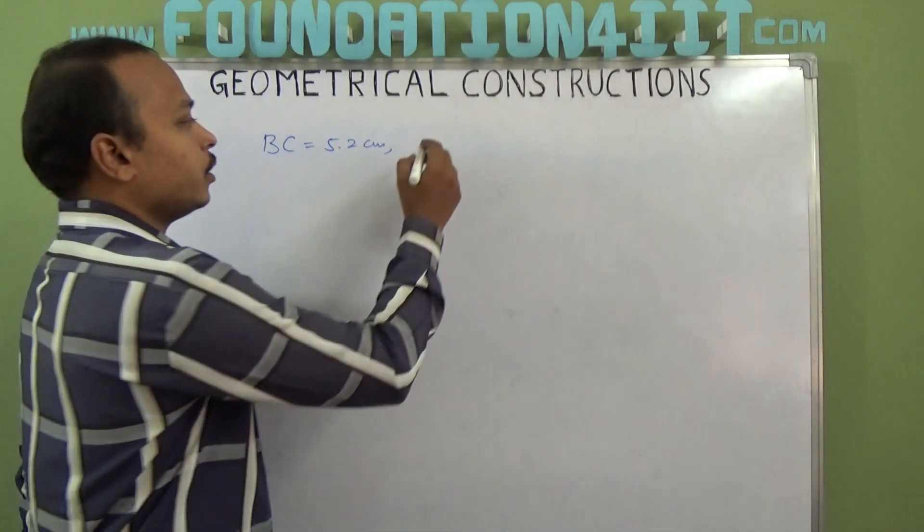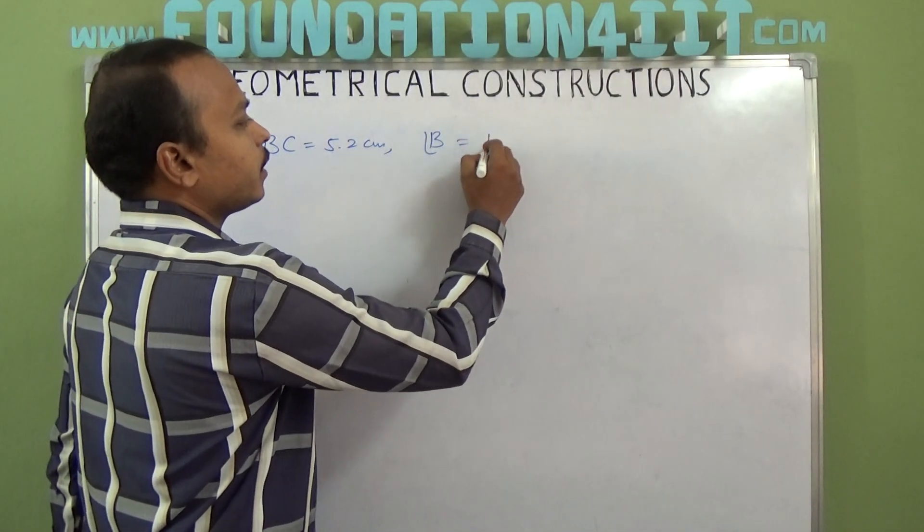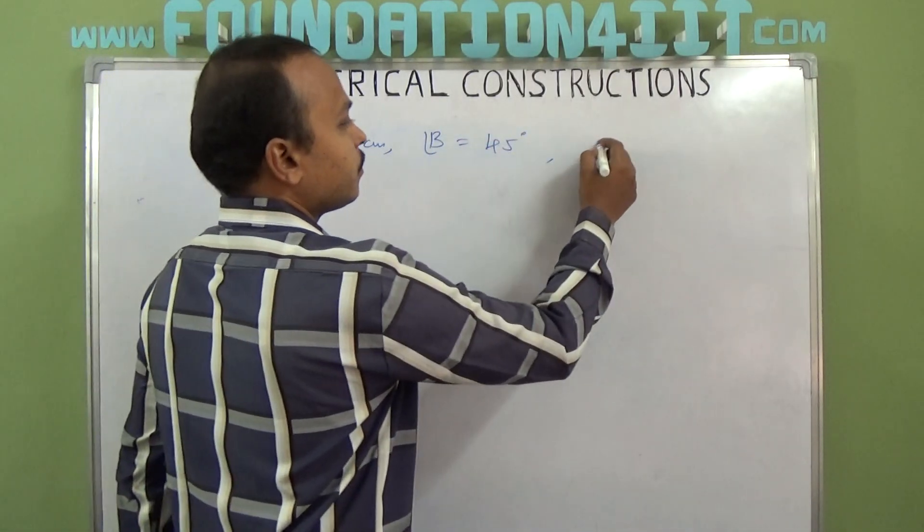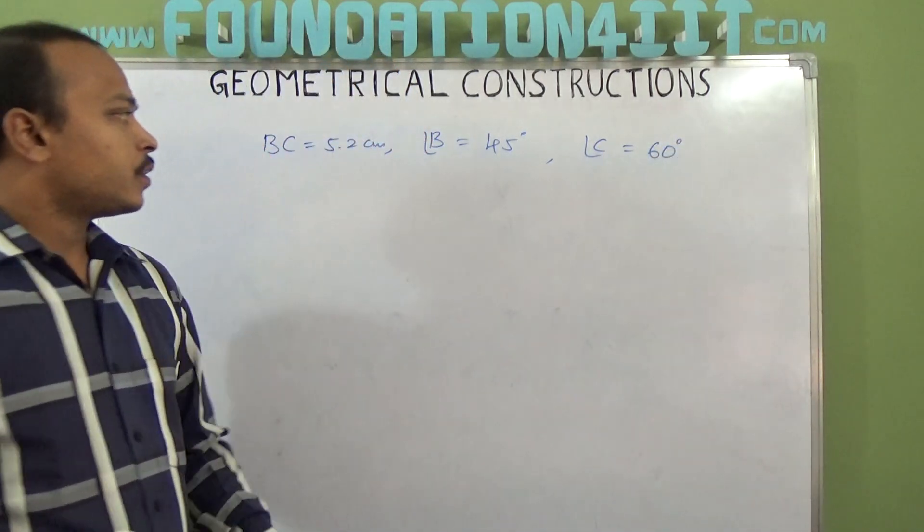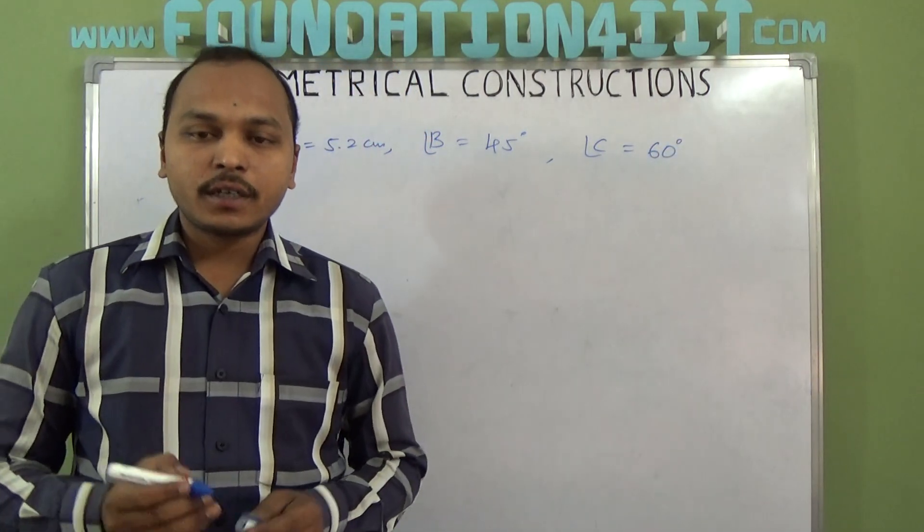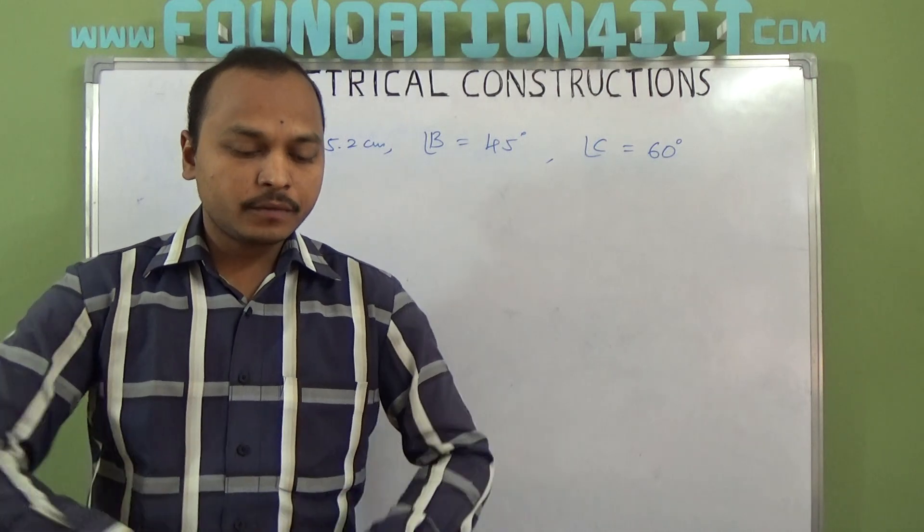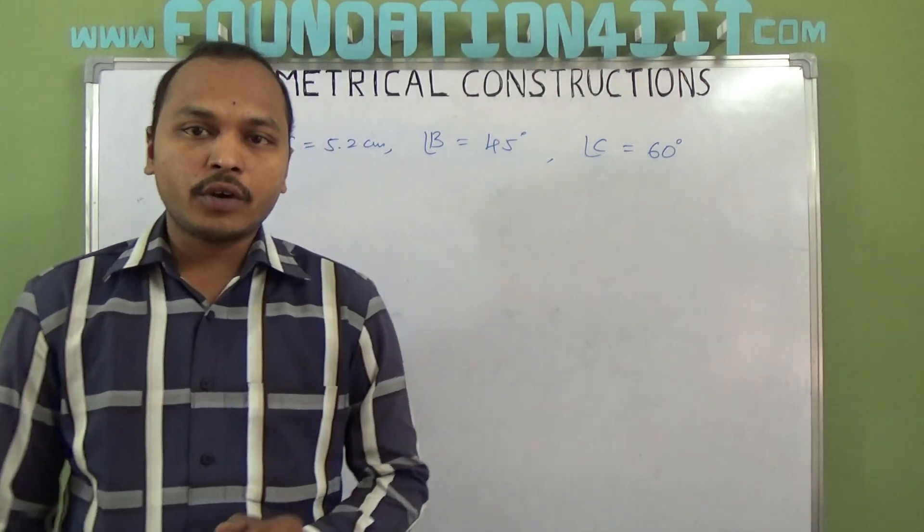That means angle B and angle C are given. For example, angle B is 45 degrees and angle C is 60 degrees. So with this data we need to construct the triangle.